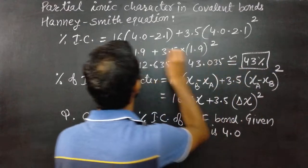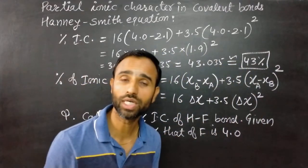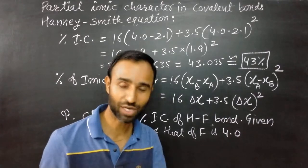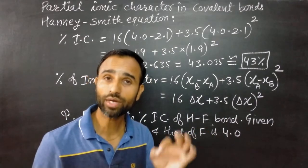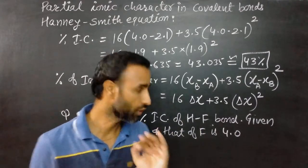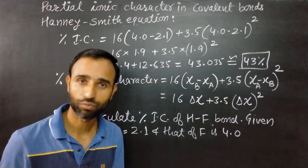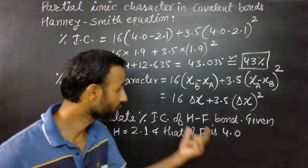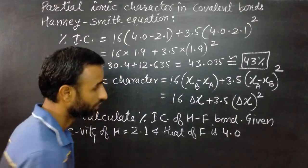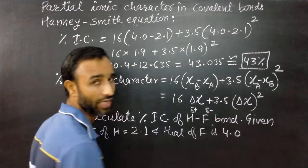That means in HF bond, percentage of ionic character is 43 percent. It is less than 50 percent. So it is considered as polar covalent bond. If percentage of ionic character is less than 50 percent, it means covalent character is more. So it is a covalent bond, but there is percentage of ionic character.